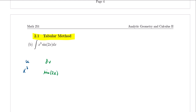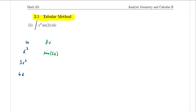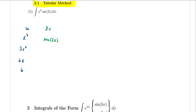For the u column, we repeatedly take the derivative. The first derivative is 3x squared, the next is 6x, then 6, and lastly 0. So we take the derivative every single time. For the v column, we do the opposite — we integrate. Integrating sine of 2x gives negative one-half cosine of 2x. We continue integrating each result down the column.